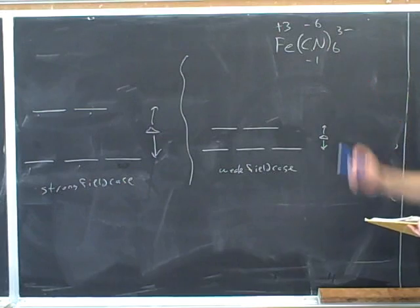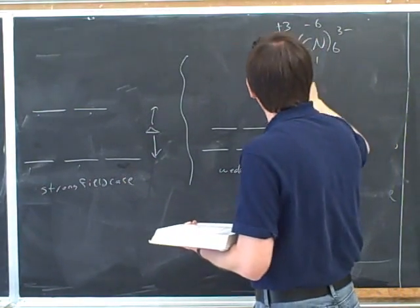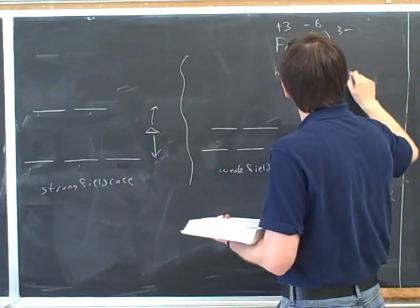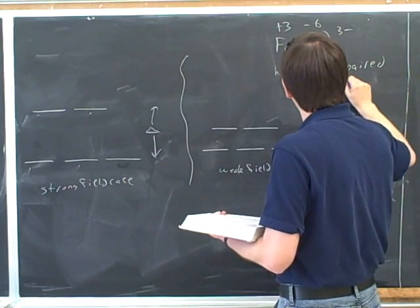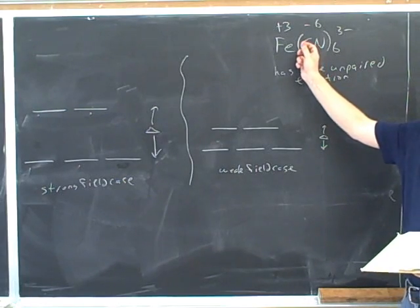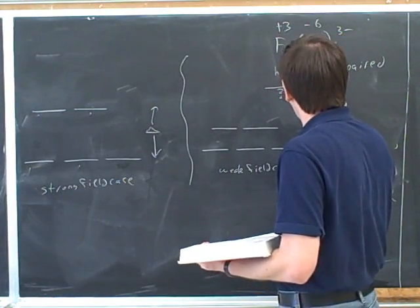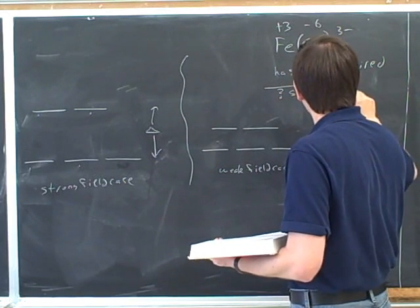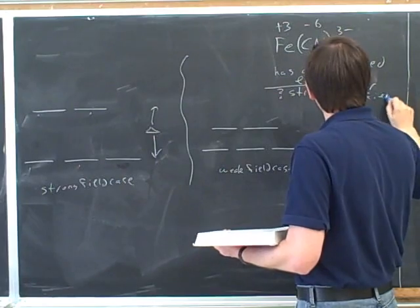Let's stick with this. So this is known to have one unpaired electron. And the question is then, is this in the strong field or the weak field case? We'll go through this together.